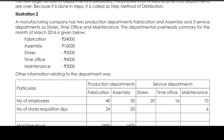A manufacturing company has two production departments, fabrication and assembly, and three service departments: stores, time office, and maintenance. The department overhead summary for the month of January to March 2016 is: Fabrication 24,000, Assembly 16,000, Stores 5,000, Time Office 4,000, Maintenance 3,000.